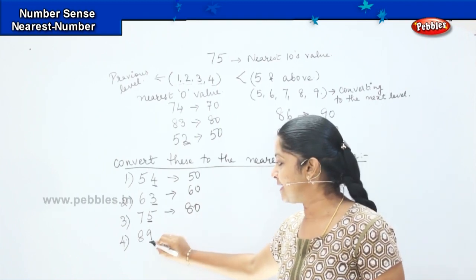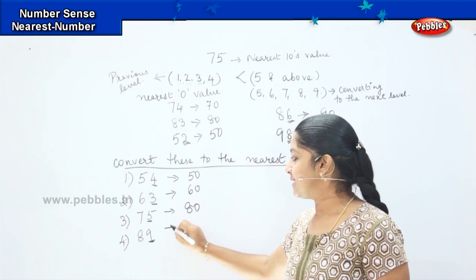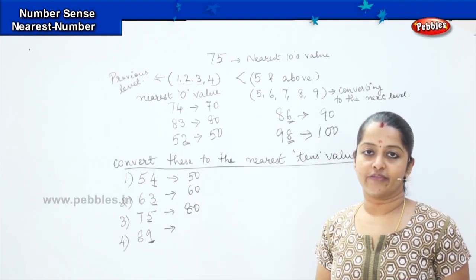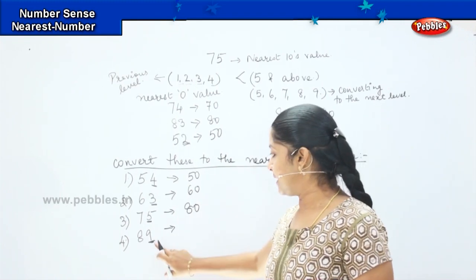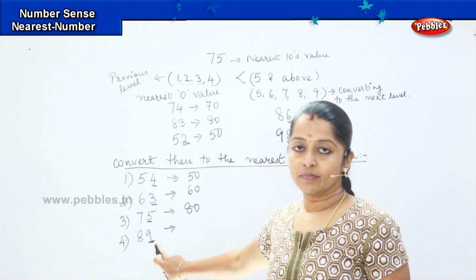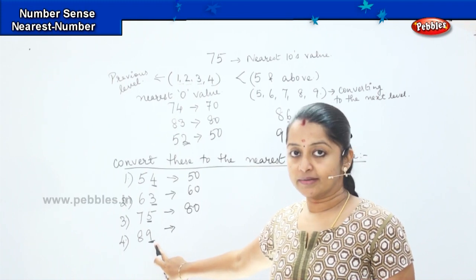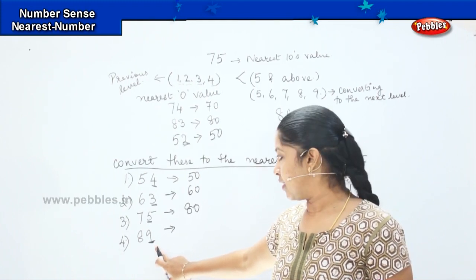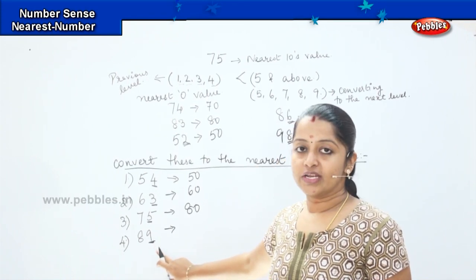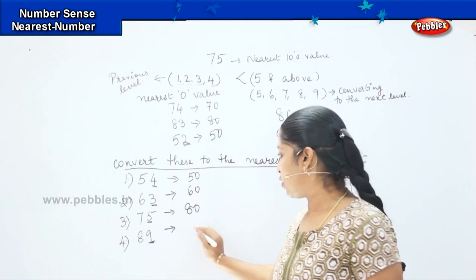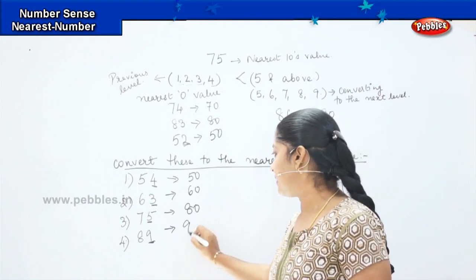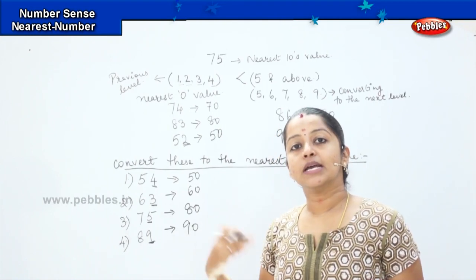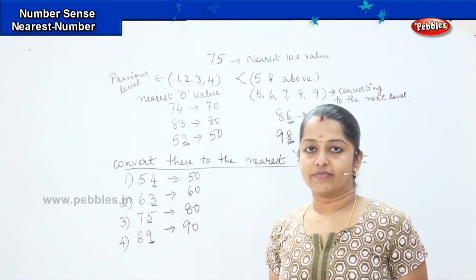The next number is 89. Is the ones digit lesser than 5 or greater than 5? The value 9 is greater than 5, so the nearest tens value will be 90. We round it up to the next level.